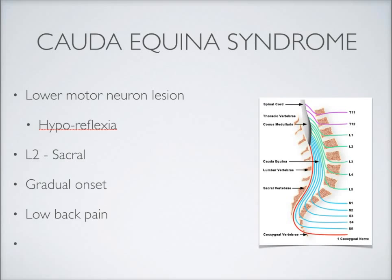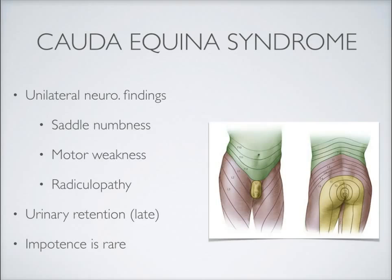Contrasting those features to cauda equina syndrome, we see nearly purely lower motor neuron lesions here. These involve the nerve roots that are technically part of the peripheral nervous system, even though somewhat counterintuitively they are still intraspinal. So we're going to see more prominent hyporeflexia. These lesions are found distal to the conus medullaris — somewhere in the cauda equina — anywhere distal to L2 through around the sacral region. This tends to have a more gradual onset compared to the sudden onset of conus medullaris syndrome.